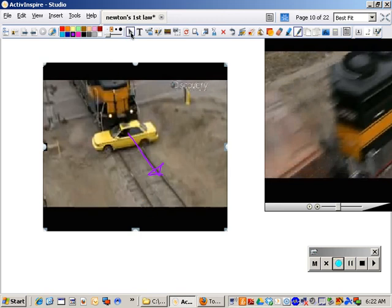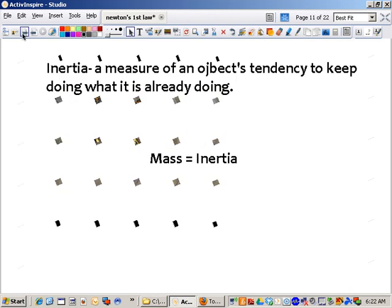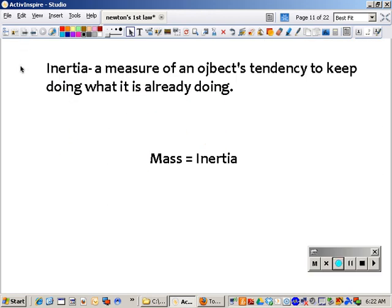So, but when an object is at rest, it just stood there. Nothing was acting on it. So we did an object in motion with the skateboarder. We did an object at rest with the car before it got hit by a train. And so this is our key vocab for the day. Inertia. A measure of an object's tendency to keep doing what it's already doing.